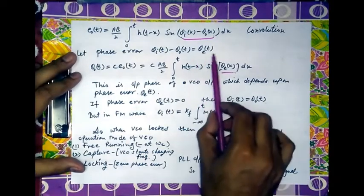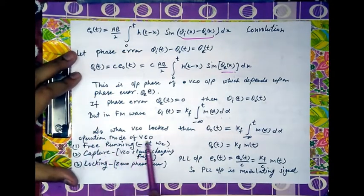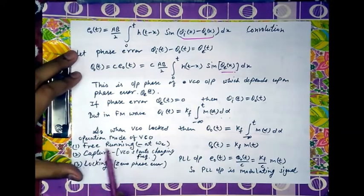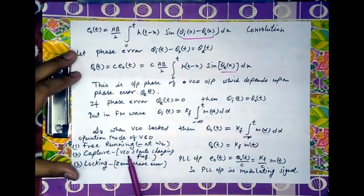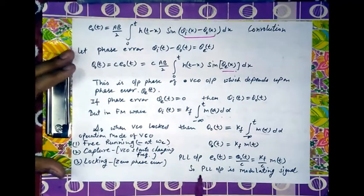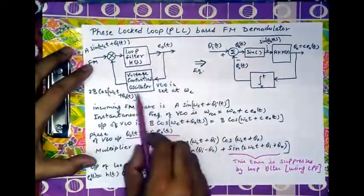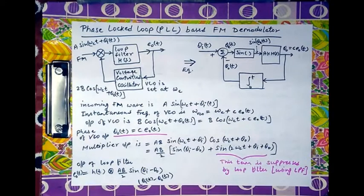The condition for demodulation is that the phase error becomes zero, at which point the PLL output equals the modulating signal. The VCO operates in three modes: first, free running at the carrier frequency at circuit startup; second, capture mode, where after several feedback loops the VCO frequency starts changing towards the FM input frequency; third, locking, when zero phase error is achieved and the circuit is locked. When locking is achieved, the output is the modulating signal. This circuit is practically popular due to its low cost and very high performance as an FM demodulator.